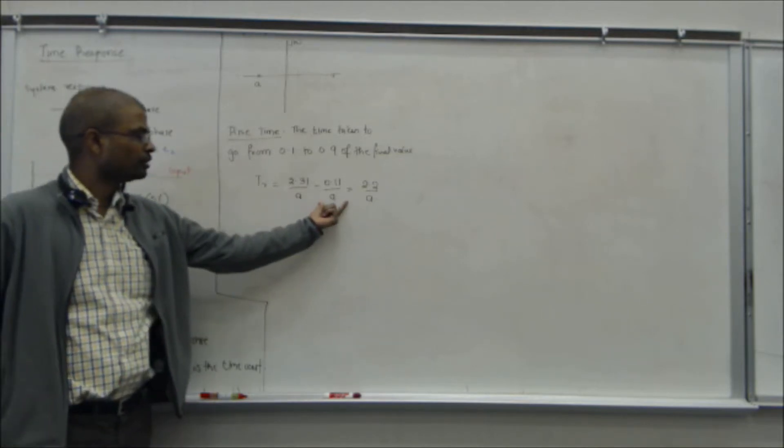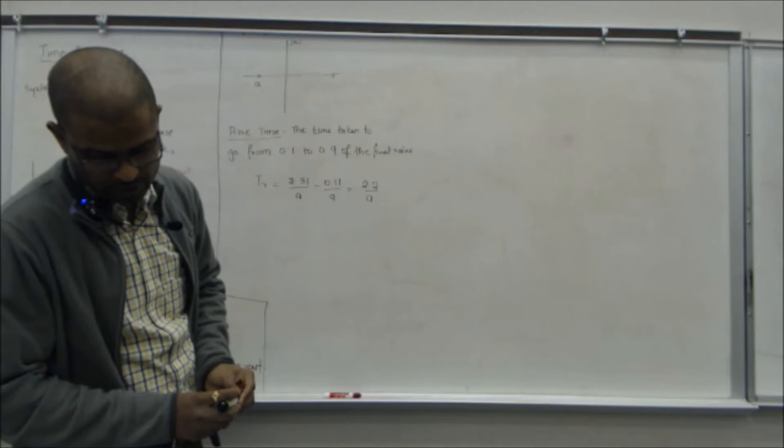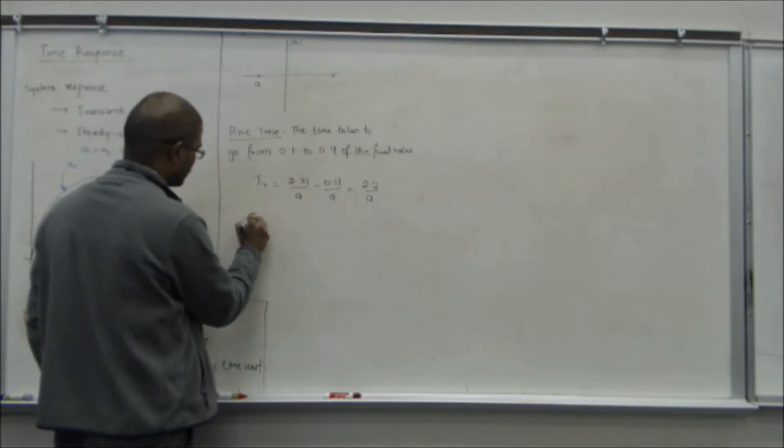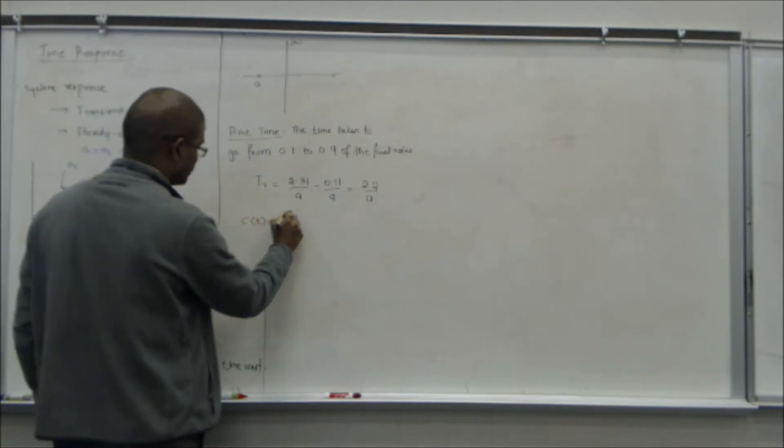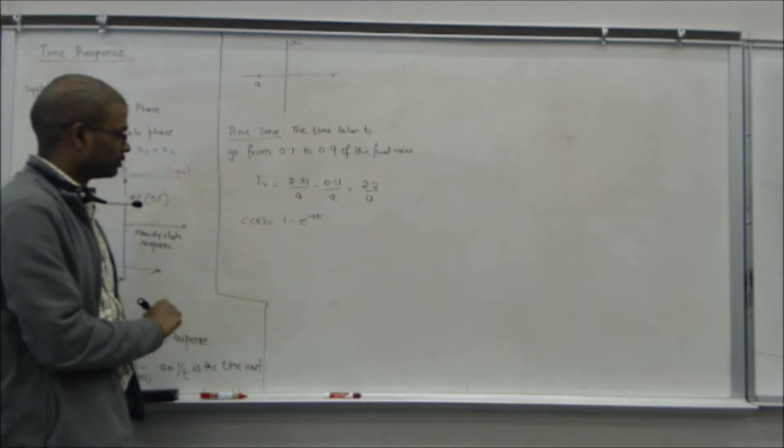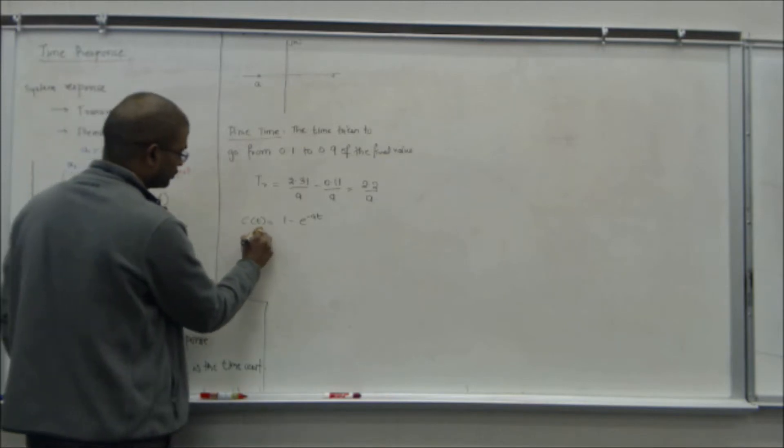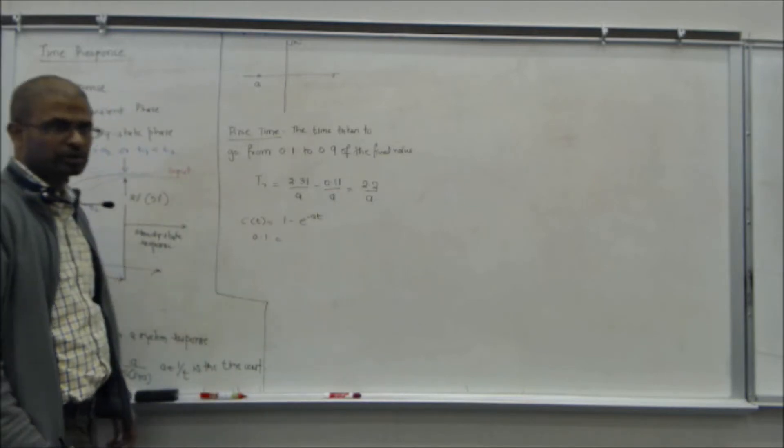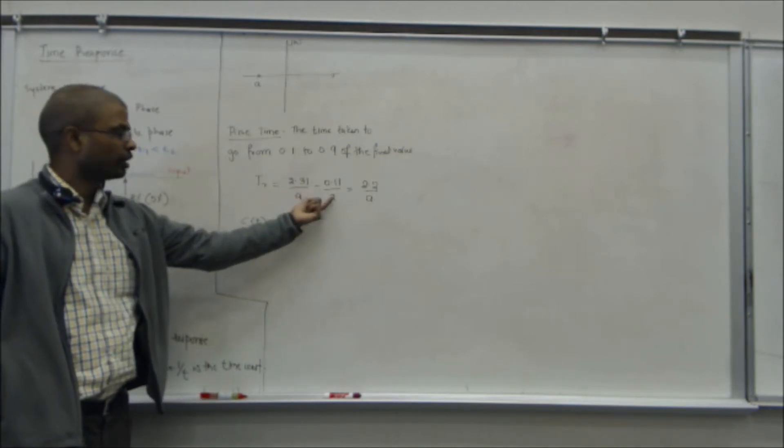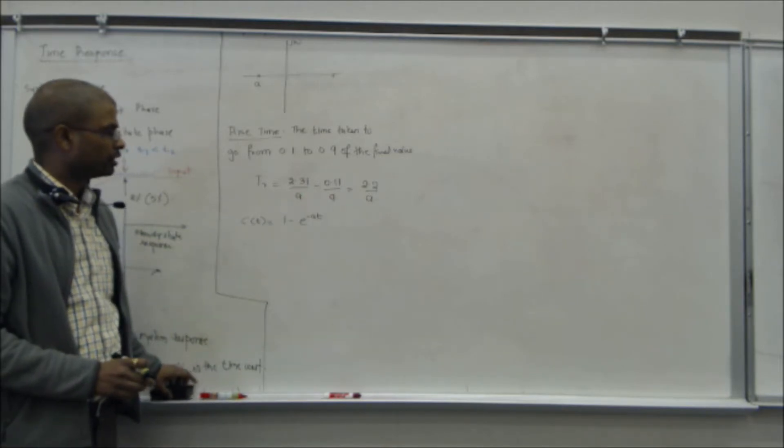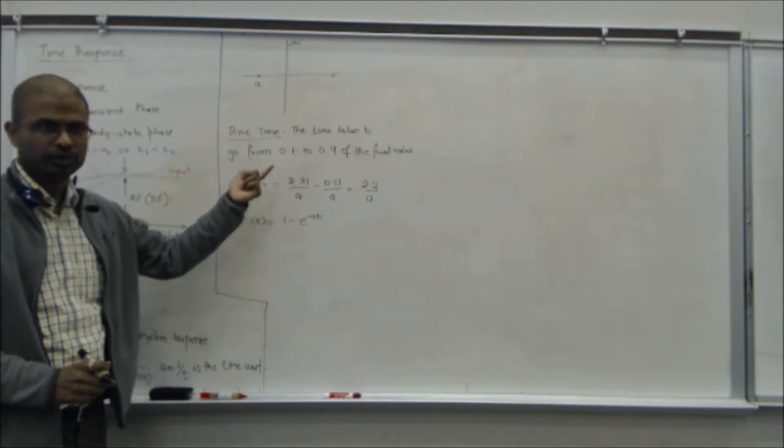This corresponds to 0.1. If this is your final value, our C(t) is 1 minus E to the power of minus AT. The time taken to, if this is 0.1, the corresponding time will be this. If this is 0.9, the corresponding value will be this. If you just subtract these two, you are going to get the time taken to respond or rise from 0.1 to 0.9 of the final value. You can do this on your own, fairly simple, not a big deal.